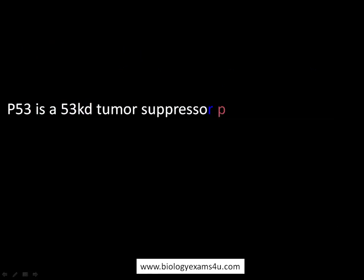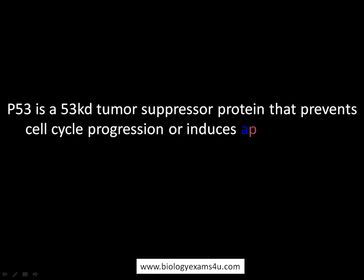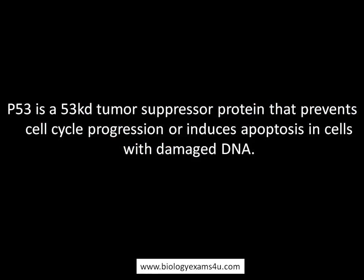P53 is a 53 kilodalton tumor suppressor protein that prevents cell cycle progression or induces apoptosis in cells with damaged DNA. P53 is the most significant gene, or most studied gene, in cancer biology due to its role in preventing carcinogenesis.